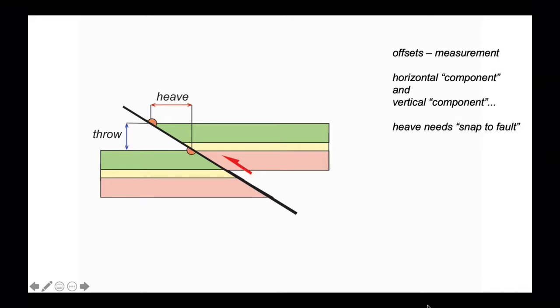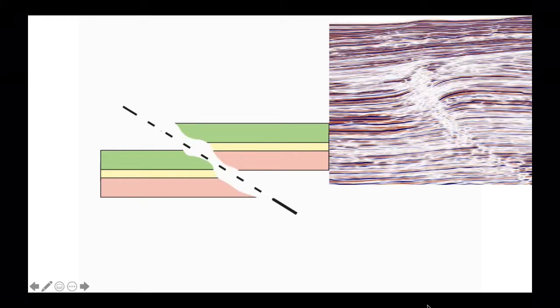Notice that to establish the heave we have to know the extent of the horizon that's been offset, in this case the top of the green. So we have to be able to snap it to the fault to know exactly where it abuts the fault plane. So we need to know where the fault is. That's not the case for the throw. Let's go and have a look at how this plays out.